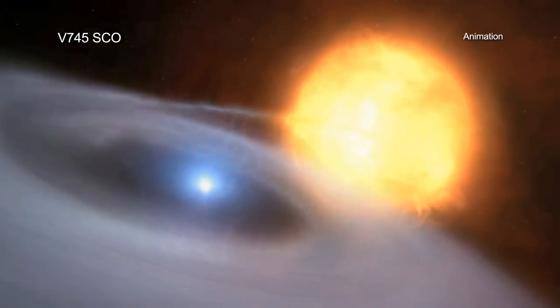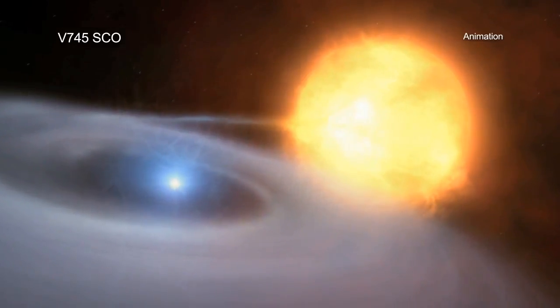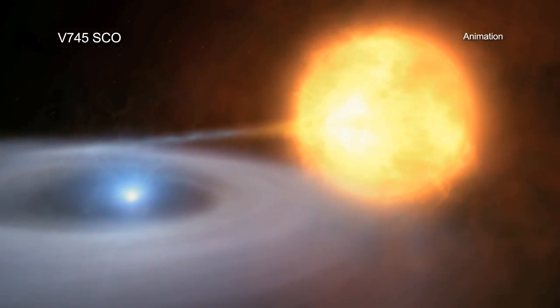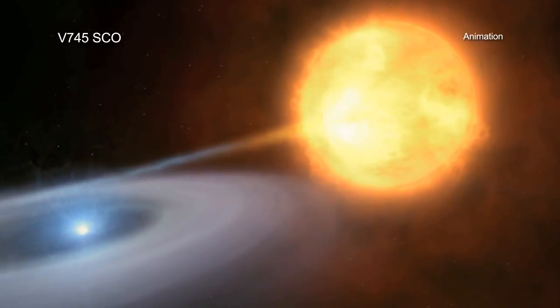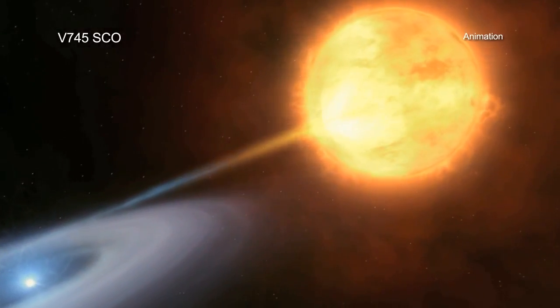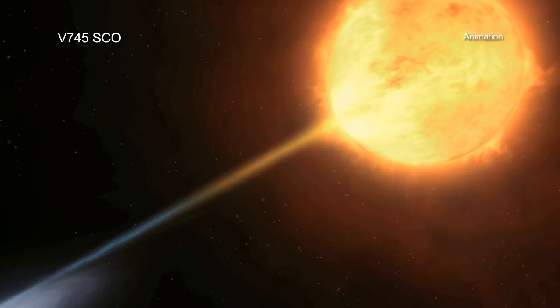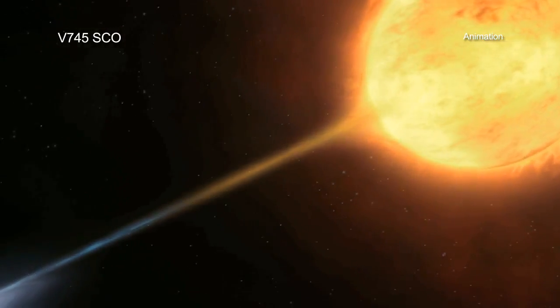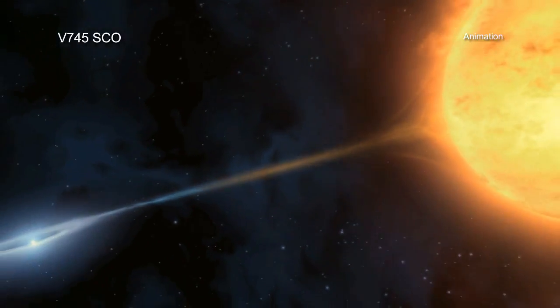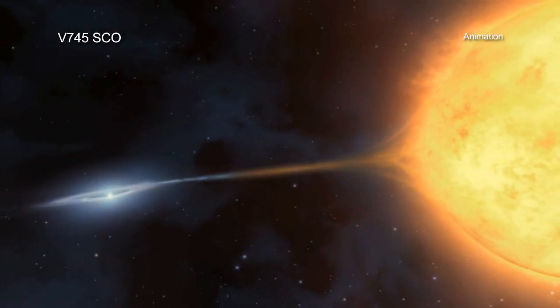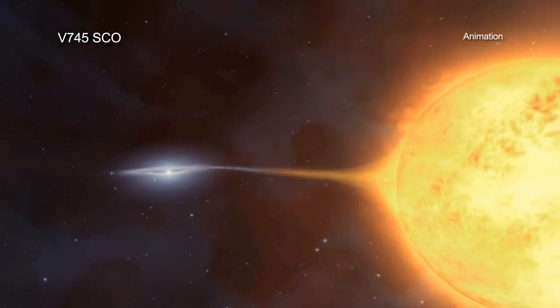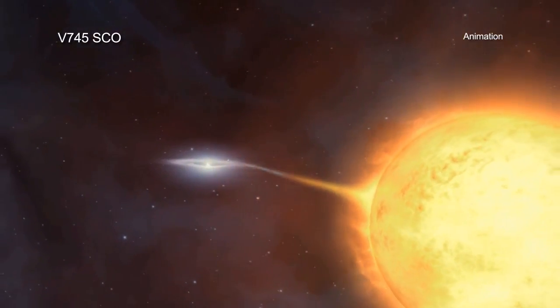V745-SCO is a binary star system that consists of a red giant star and a white dwarf locked together by gravity. These two stellar objects orbit so closely around one another that the outer layers of the red giant are pulled away by the intense gravitational force of the white dwarf. This material gradually falls onto the surface of the white dwarf.